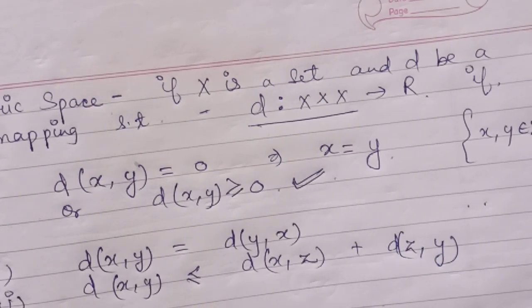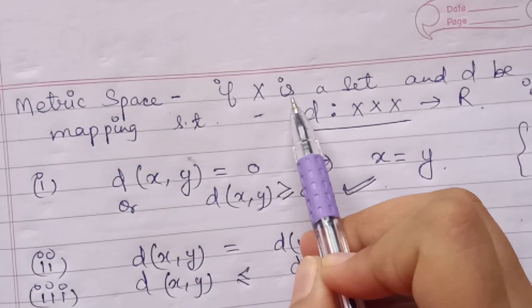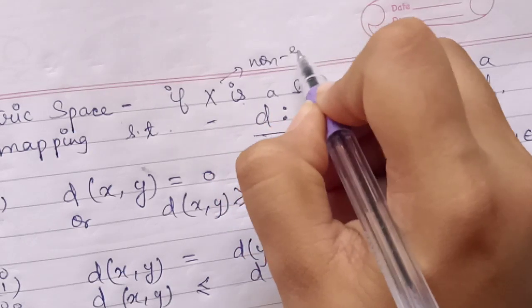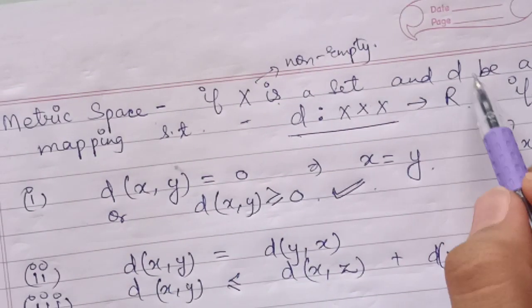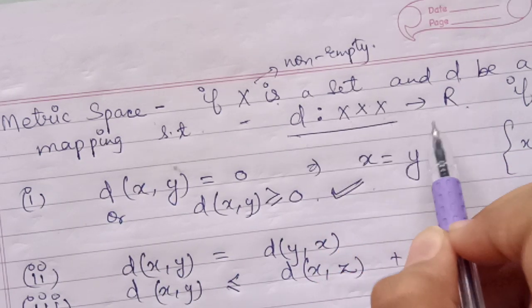Today we will see what is metric space. If X is a non-empty set, and there is a mapping D defined as X cross X to R.